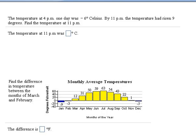Here, we're going to finish up with some word problems. This one says the temperature at 4 p.m. one day was negative 6 degrees Celsius. By 11 p.m. the temperature had risen 9 degrees. Find the temperature at 11 p.m.